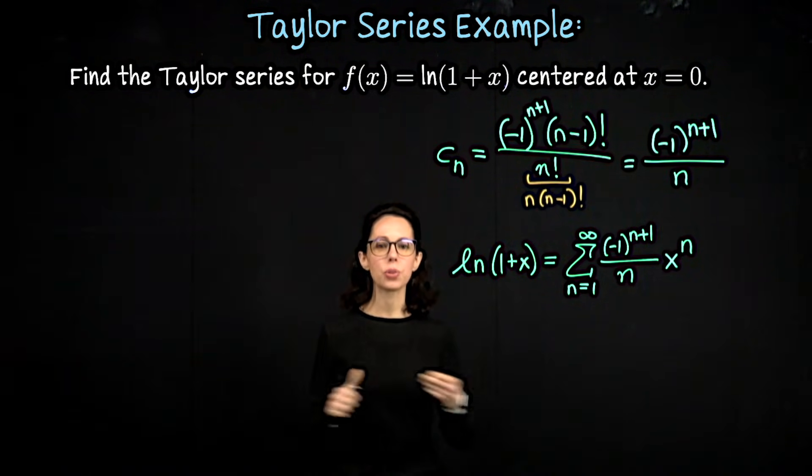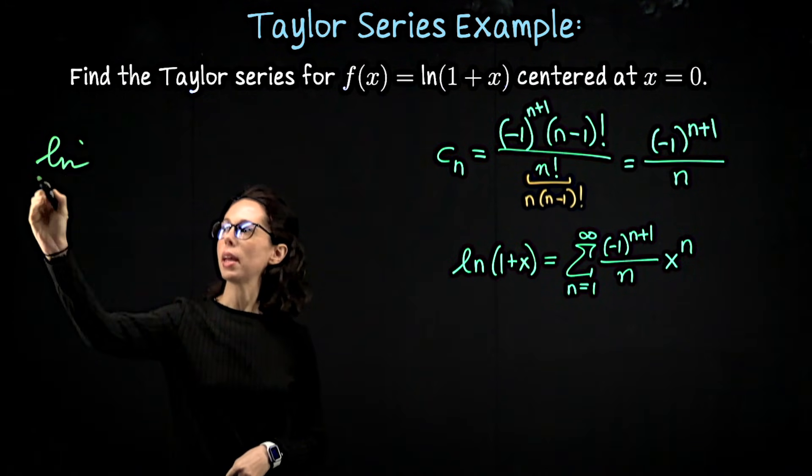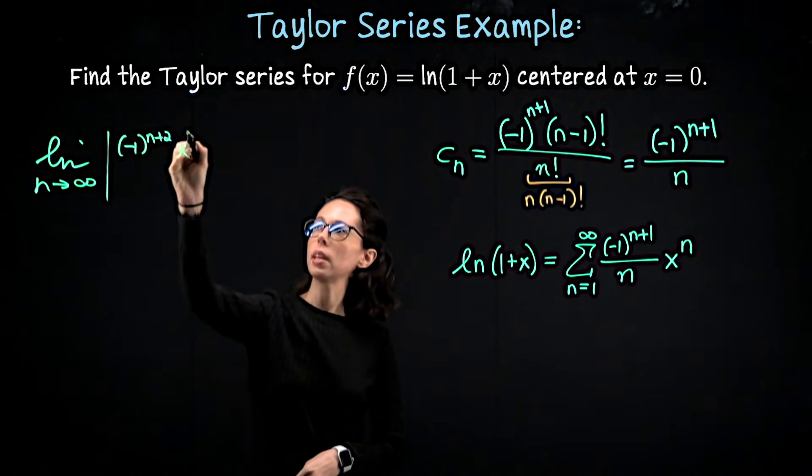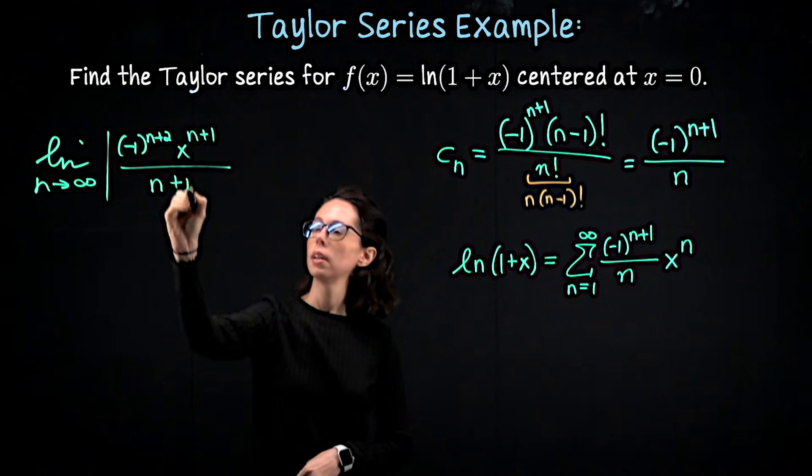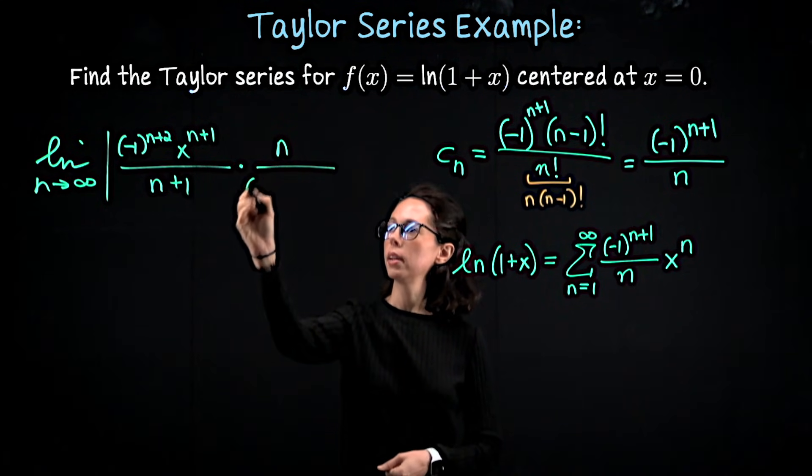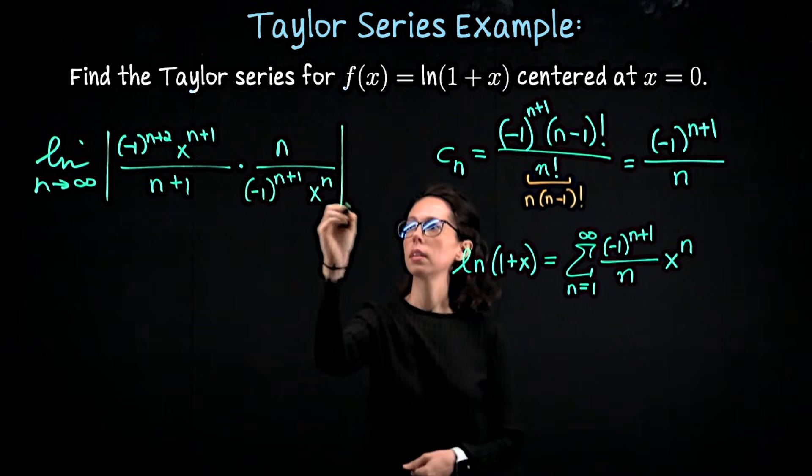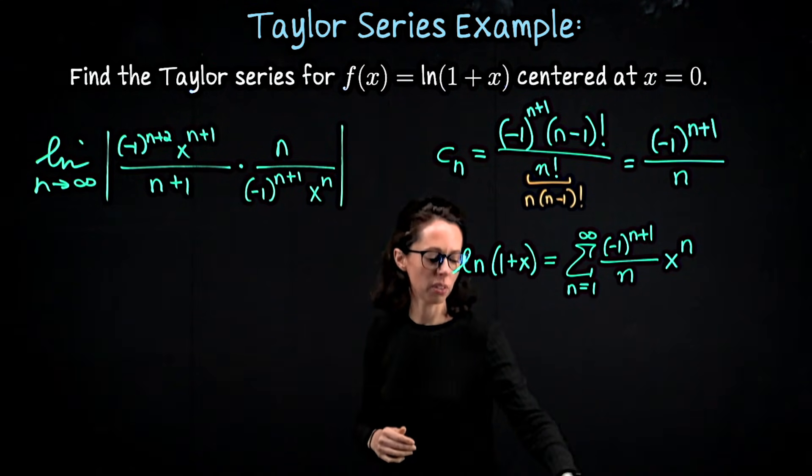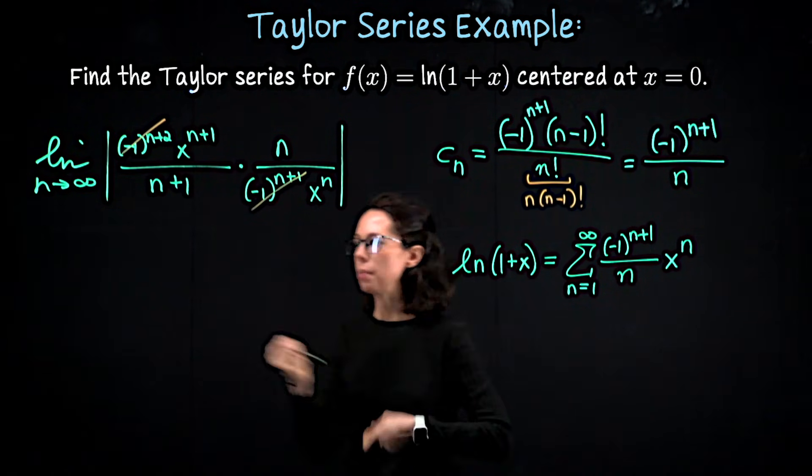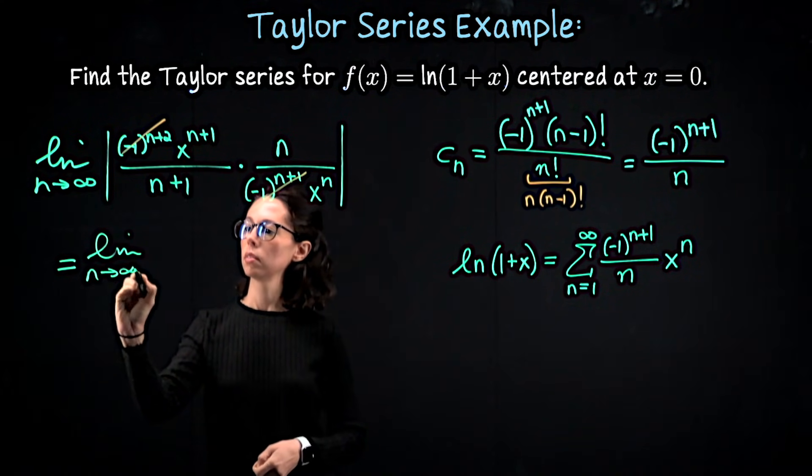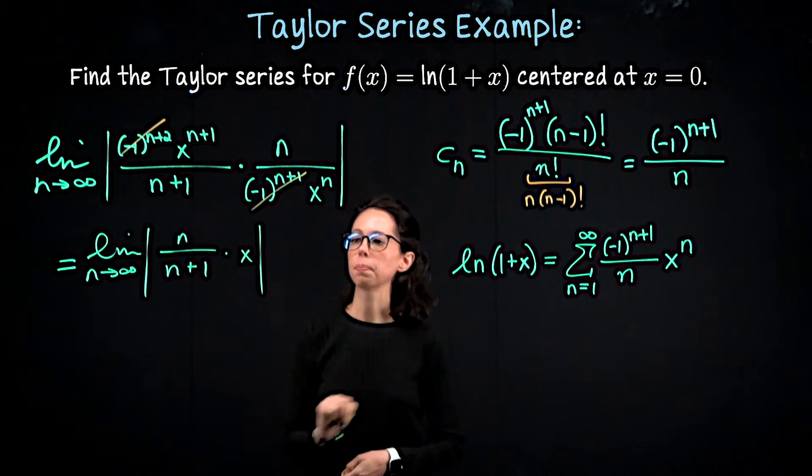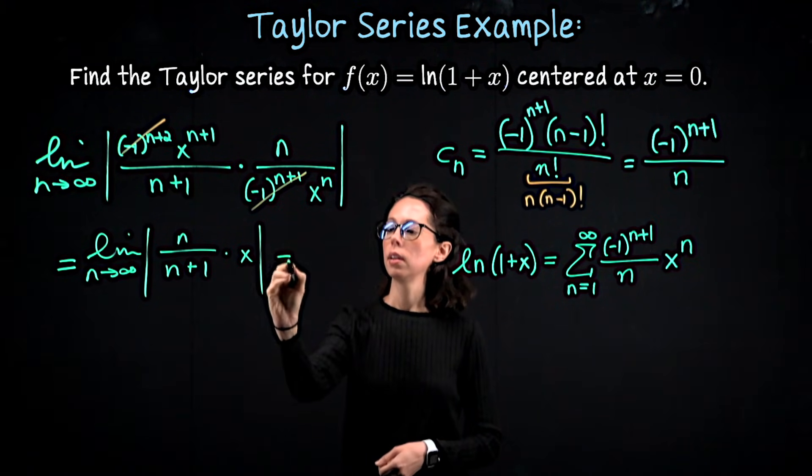To find the radius of convergence, let's use the ratio test. I'll just stick with the regular ratio test. So we can take the limit as n goes to infinity of (-1)^(n+2) times x^(n+1) divided by (n+1), times the reciprocal of the term with the index n. So that's going to be n divided by (-1)^(n+1) times x^n. I wrote the negative 1 expressions, but you don't need to, because we're taking an absolute value and they won't end up mattering. So if I write this one more time, this is going to be the limit as n goes to infinity of n over (n+1) times x. As n goes to infinity, this ratio goes to 1. So this is the absolute value of x.